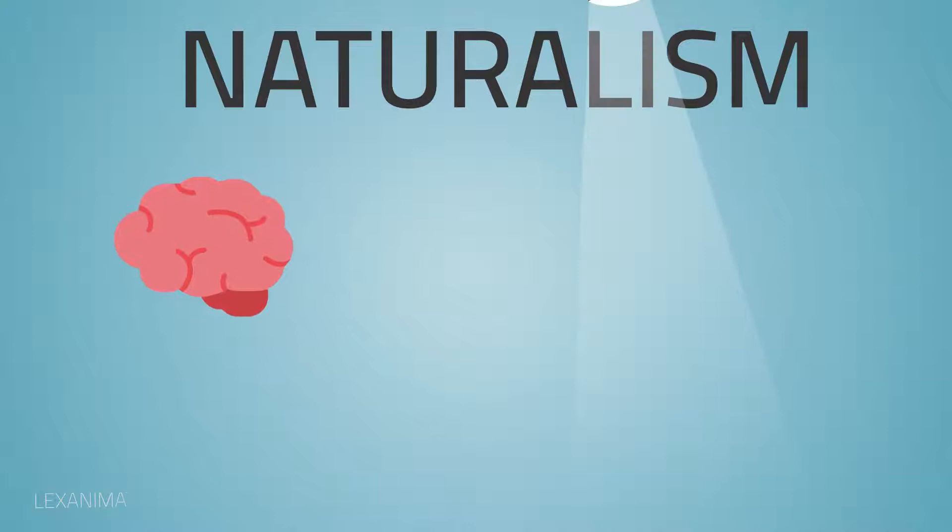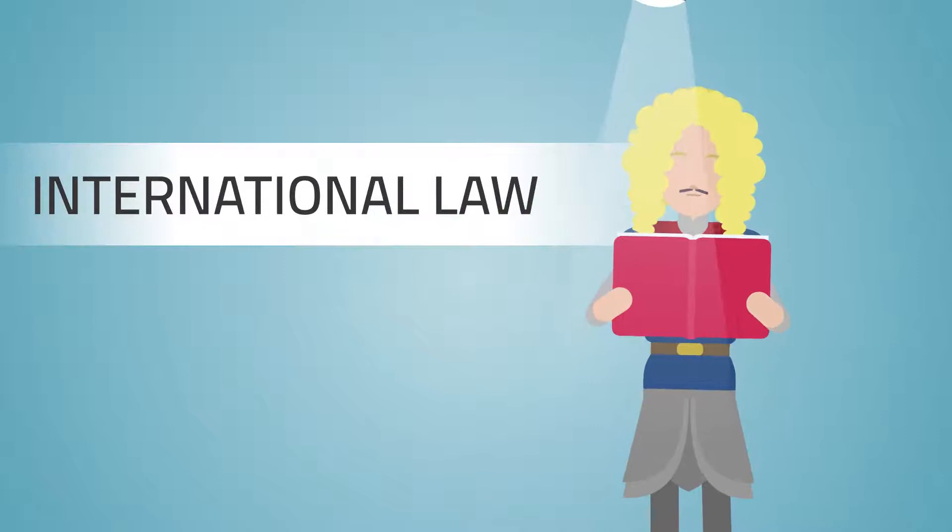On the one hand, there was the naturalist school, represented by Samuel Pufendorf, who tried to identify international law completely with the law of nature.